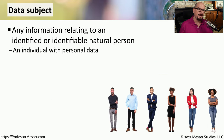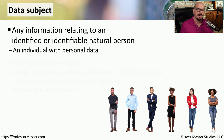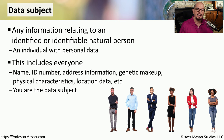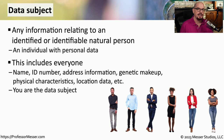The GDPR defines a data subject as any information relating to an identified or identifiable natural person — effectively anyone who lives in those particular countries. Anyone interested in protecting their private data, such as their name, their address, their genetic makeup, their location data, or anything else, would be considered a data subject. Effectively, all of us are data subjects.